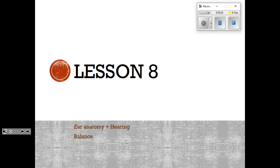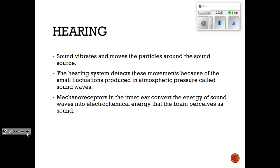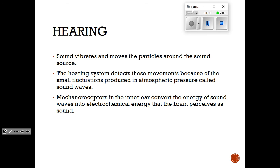We're going to cover what happens in your ear today. You might recall from our previous lesson that there are two types of mechanoreceptors: the ones involved with hearing and the ones involved with balance. We're going to start off with how hearing works — here's an overview of hearing.